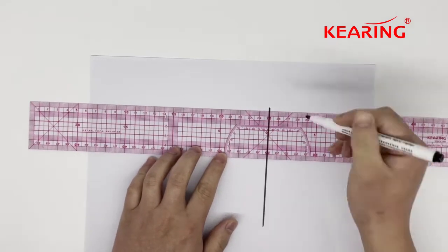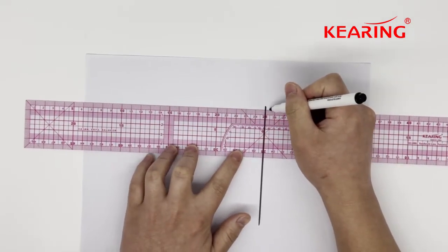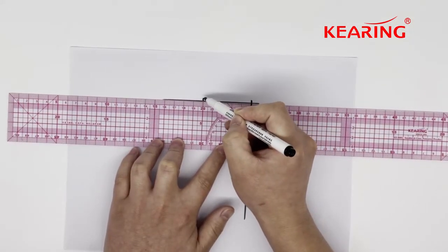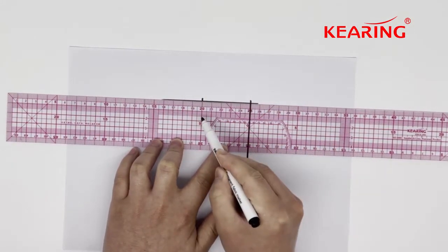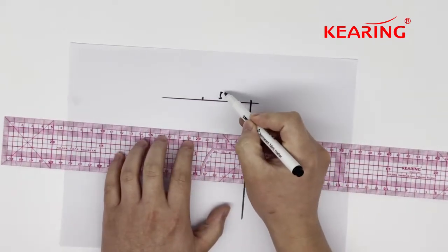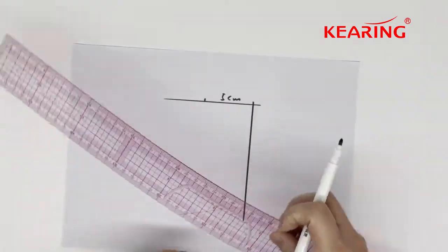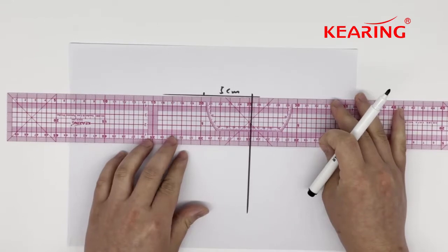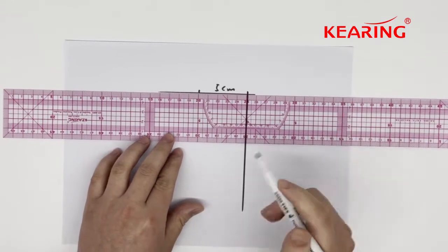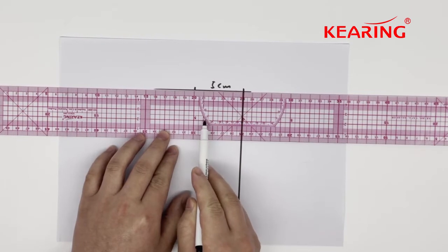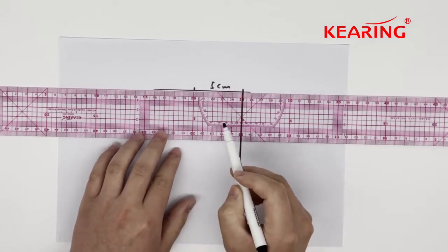For example, if we want a 5 centimeter line here, we make a mark at this part, 5 centimeters. From here we can see 10, 20, 30, 40 degrees. Just for example, if we want 30 degrees.